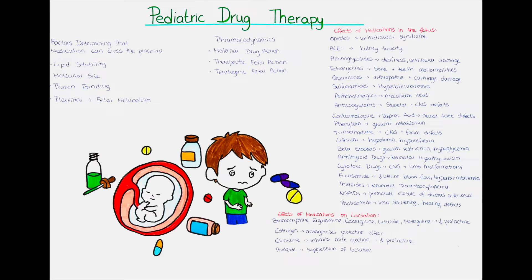Sedatives such as thalidomide can cause shortening of the limbs and hearing defects. Psychoactive drugs such as barbiturates, benzodiazepines, and opioids can cause a neonatal withdrawal syndrome. As you can see, the list is very long, which makes it especially important to advise the patient as early in pregnancy as possible — ideally before the patient becomes pregnant — to go through the patient's medications and if necessary initiate a cessation or change of medications.